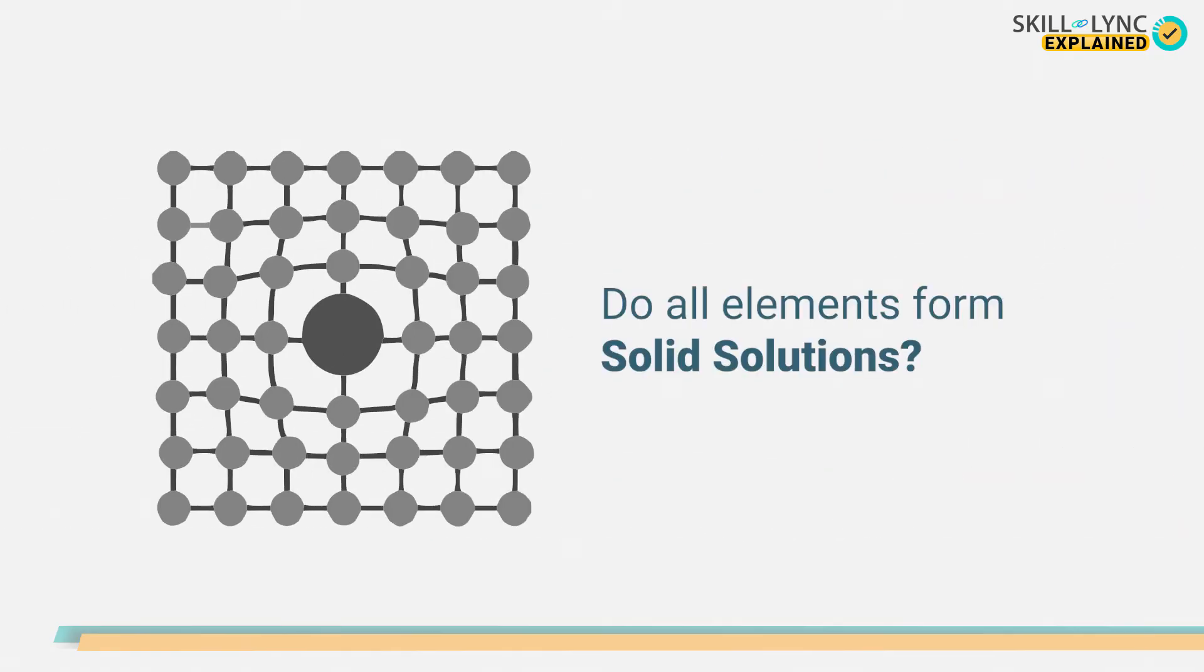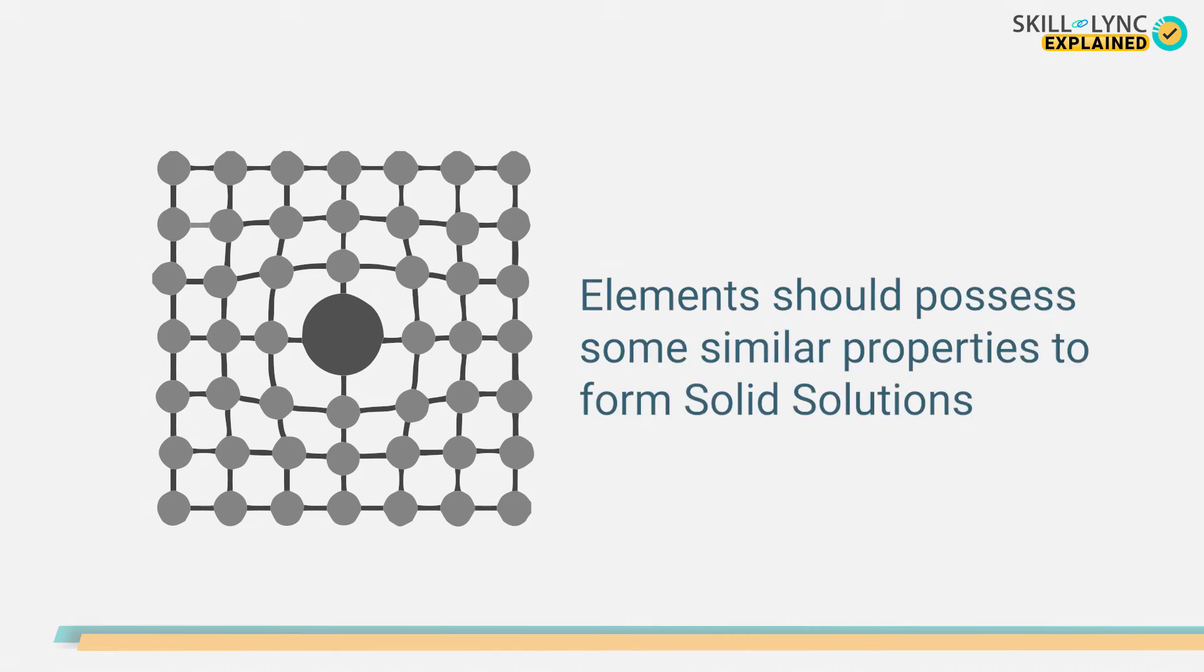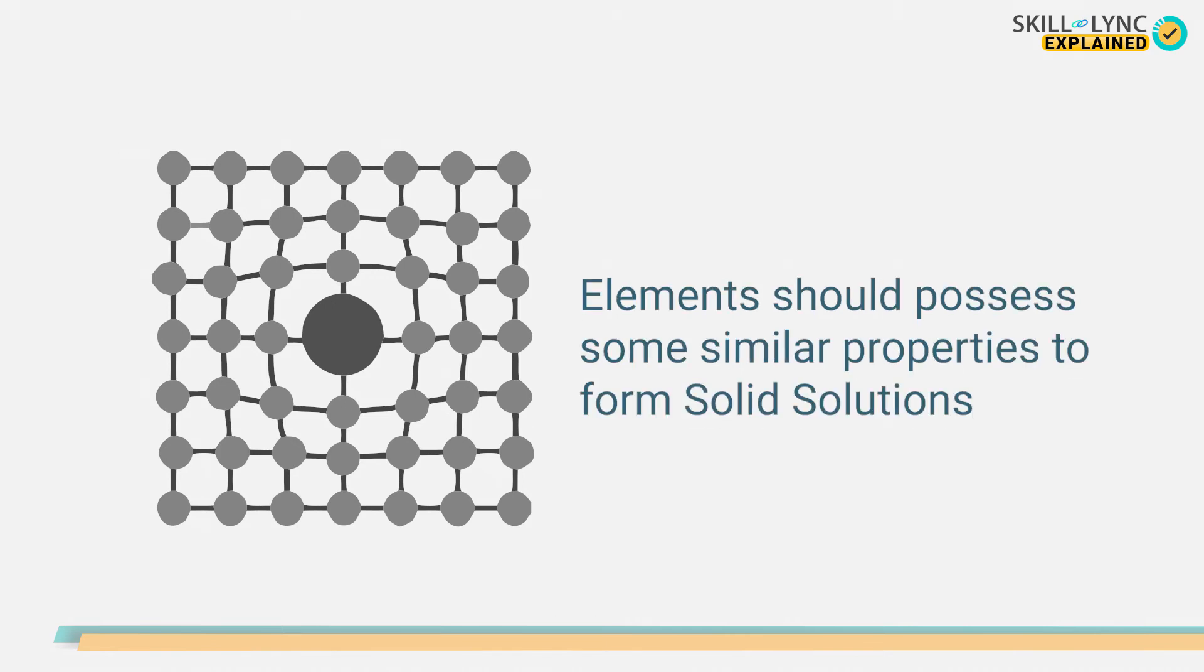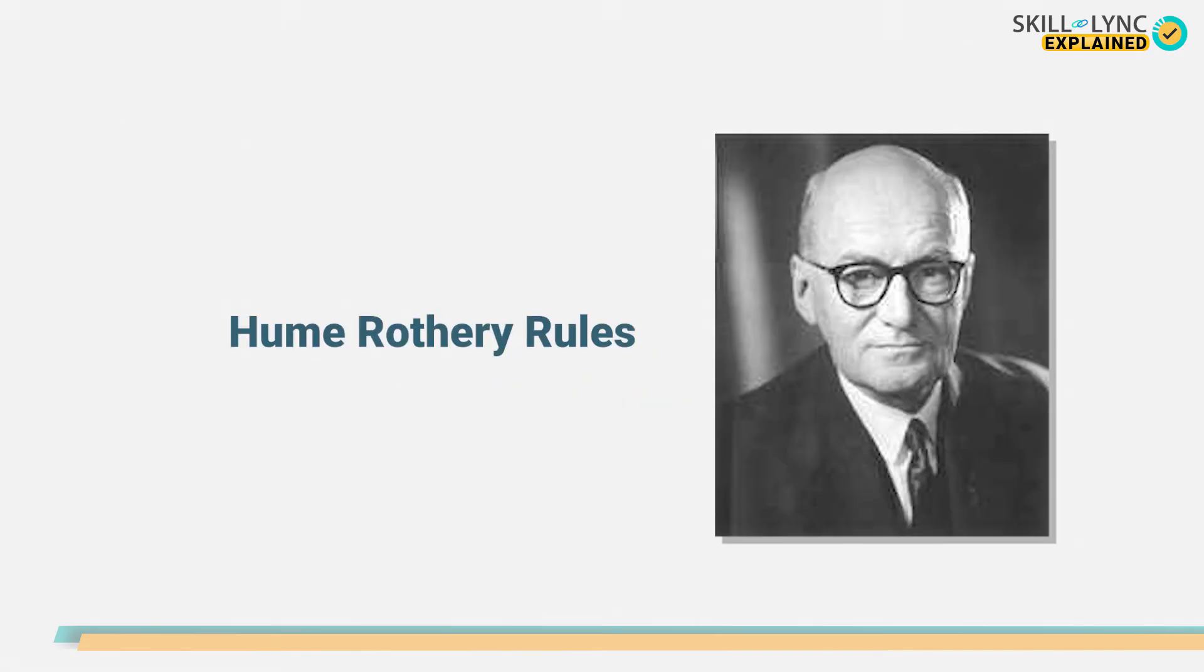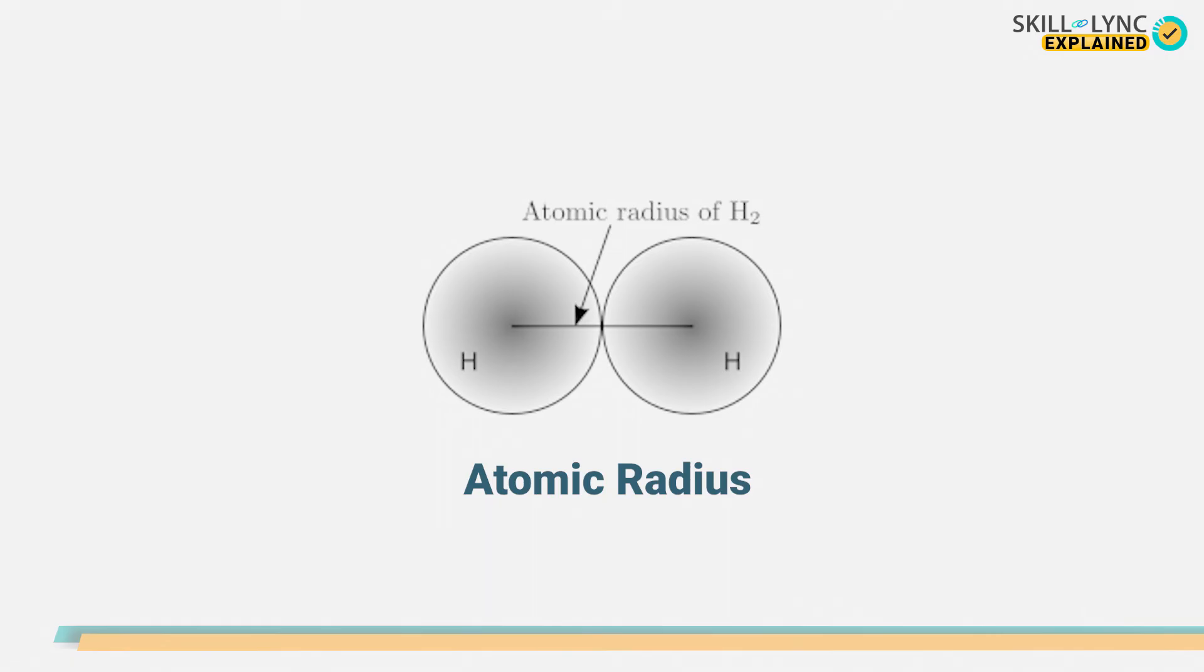But do all elements form solid solutions? The elements should possess some similar properties to form solid solutions. Hume-Rothery put forth a certain set of rules that state the conditions for metals to form solid solutions. First, both the solute and solvent atoms should have similar atomic radius. The difference between the radii of the atoms must be less than 15% so that they form a solid solution.